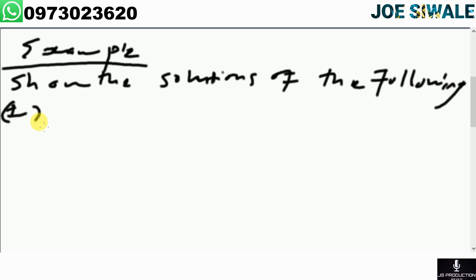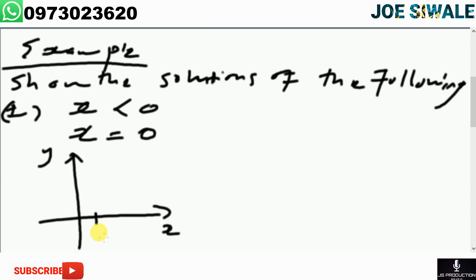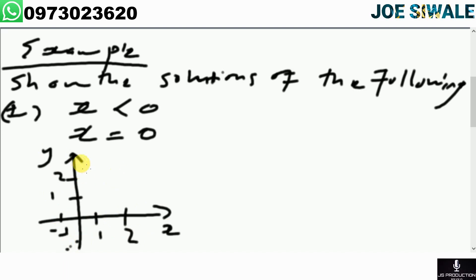The first example reads: show the solutions of x is less than 0. To do this, I first draw x equals 0, setting up my y-axis and x-axis with values 1, 2, negative 1. Drawing x equals 0 gives a straight vertical line. But since the sign is less than, the line must be a dotted line.